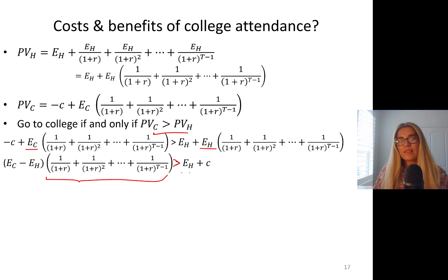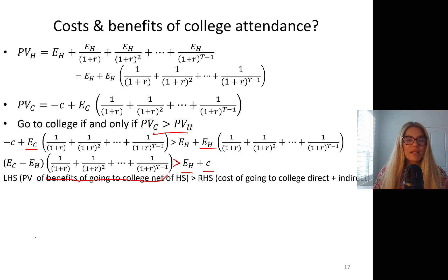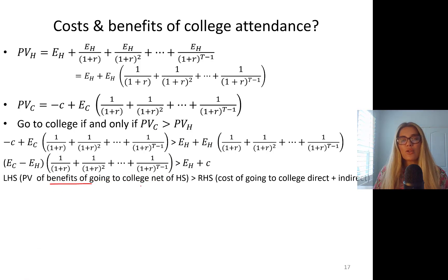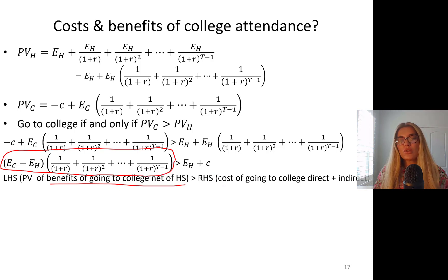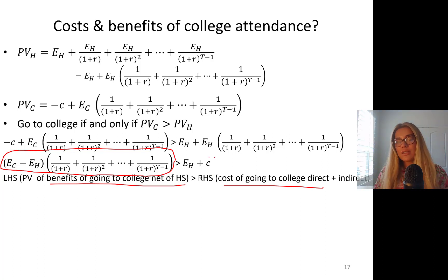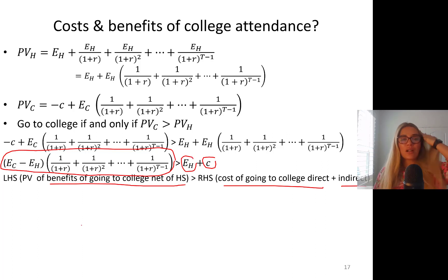The left-hand side represents the present value of the benefits of going to college net of high school earnings, and the right-hand side represents the total cost of going to college: direct cost c plus indirect cost of lost earnings Eh for one period.